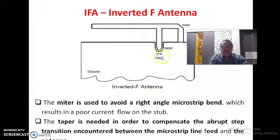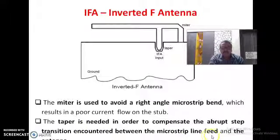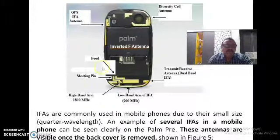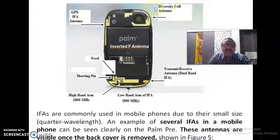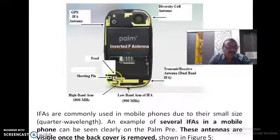This is the figure of the notched inverted F antenna. There is a milled notch that reduces losses due to poor current flow in the stub, similar to a right-hand microstrip approach. There is also a taper to compensate for the abrupt step transition between the microstrip line feed and the antenna. This shows the mobile phone antennas: a GPS antenna in IFA form, a diversity cell antenna, and a transmit-receive dual-band antenna also in IFA form. The lower band arm operates at 900 MHz and the higher frequency band operates at 1800 MHz, with a shorting pin and feed point shown.